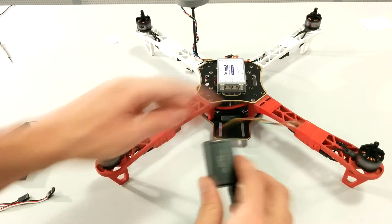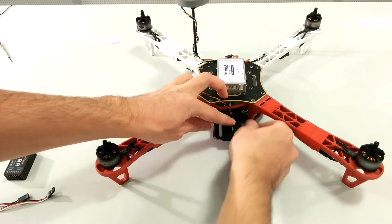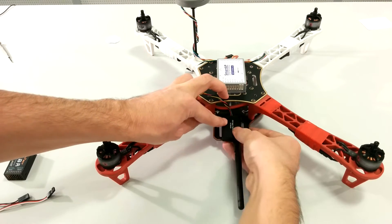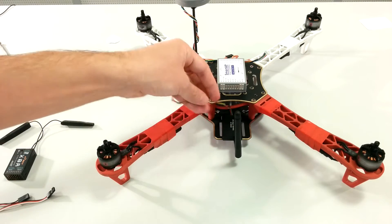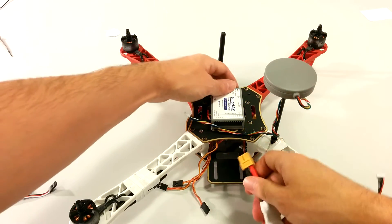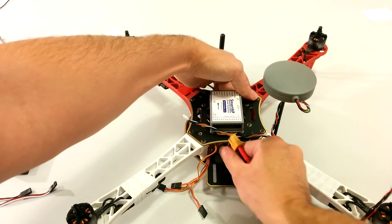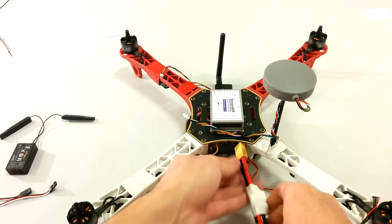Telemetry module can be mounted anywhere on your airframe. Just make sure that its antenna is not shadowed by any other things, and keep it far enough from high current sources and electromagnetic emitters. Power module is usually mounted on a lower plate of the airframe. Make sure that it can be easily connected to the battery later.